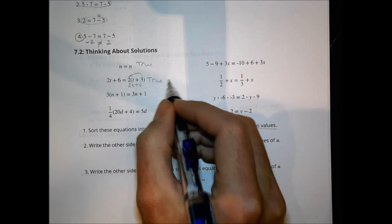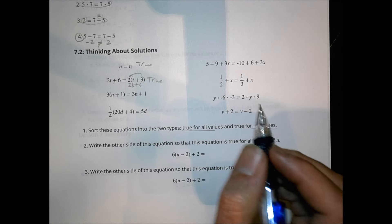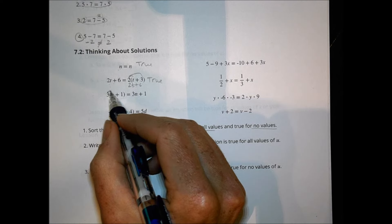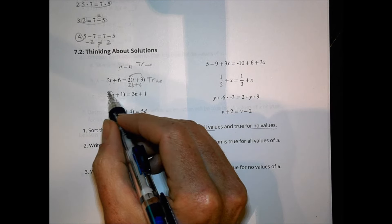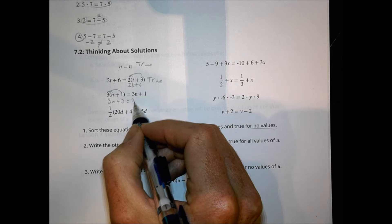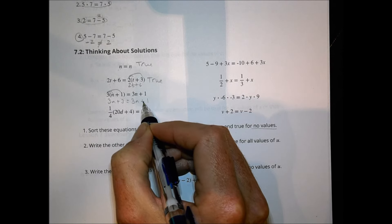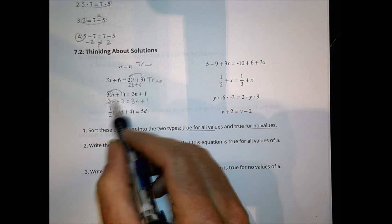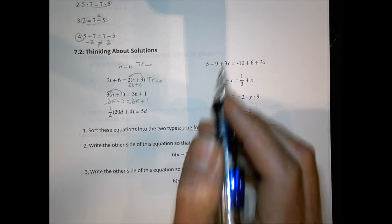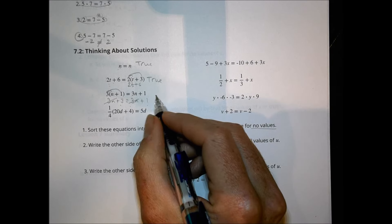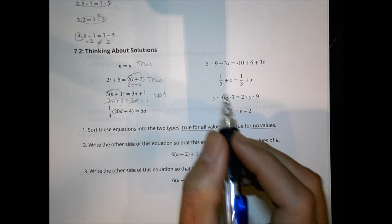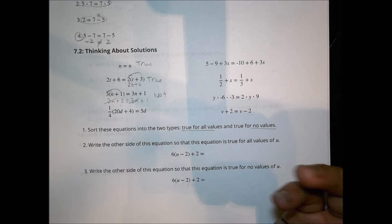So this is true for any number n or t we choose. On this next one, we distribute and have 3n, and 3 times 1 is 3. So 3n plus 3 equals 3n plus 1. The 3n's would be eliminated — would 3 equal 1? No, it wouldn't. So no matter what value we put in there, we're not going to ever have a solution. It's not going to be true for any number we could select.